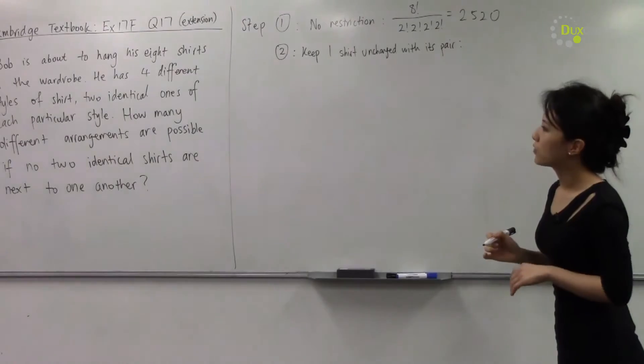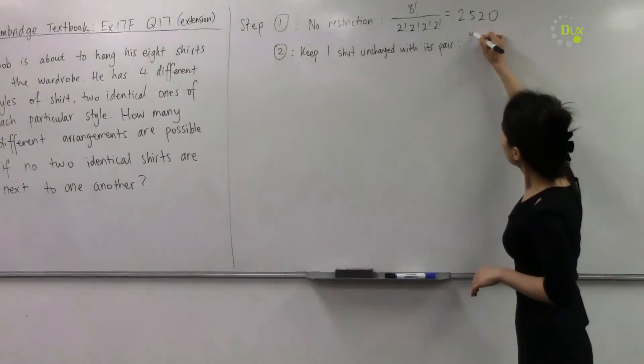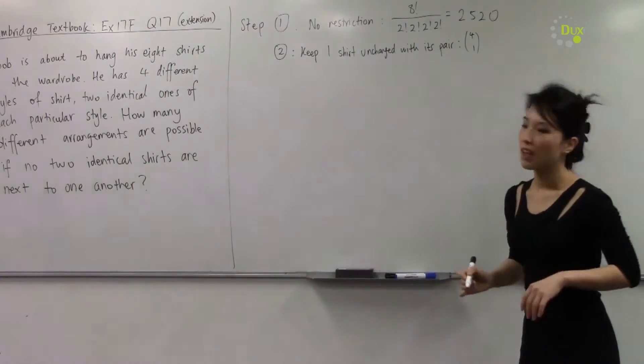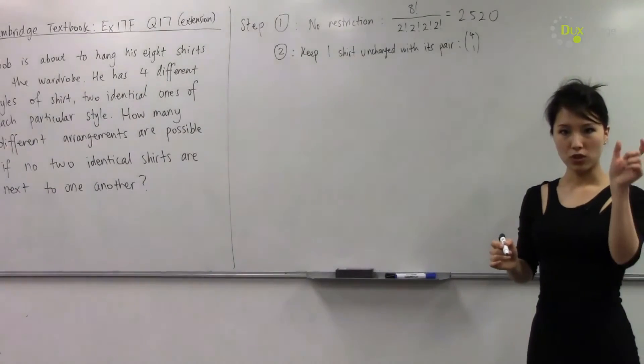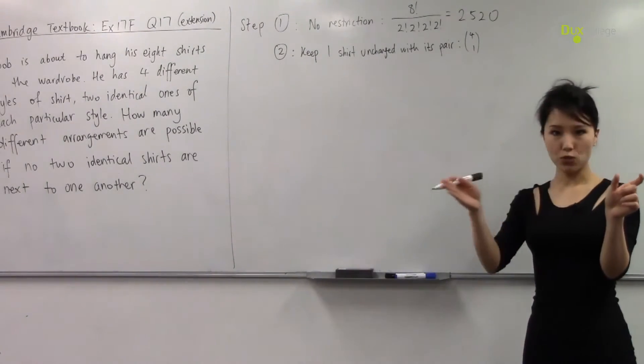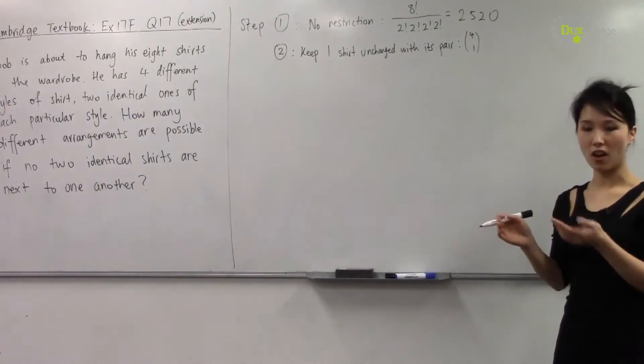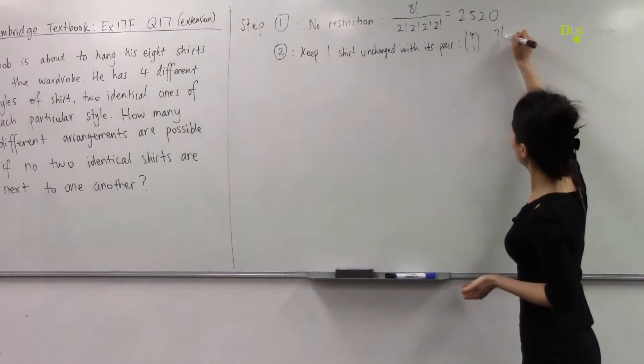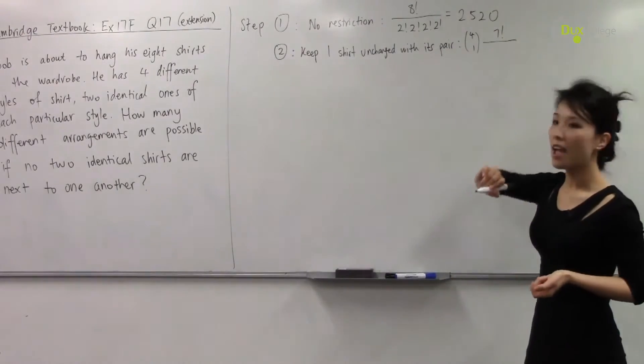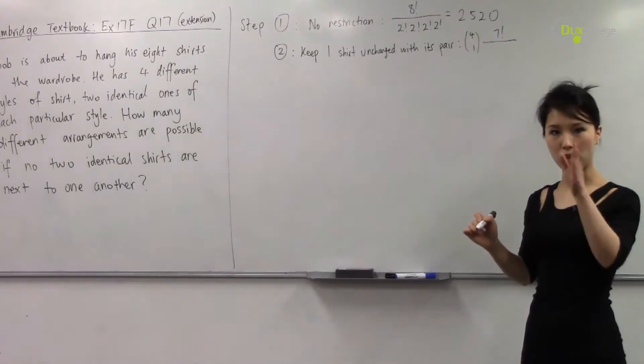So first of all, out of the four pairs we need to choose one pair, so four choose one. And that one pair we have to treat as one item. And then we have six remaining shirts to be arranged in a row. So therefore we have seven items in total to be arranged in a row. So that's seven factorial ways, and then divided by the three repeated pairs.